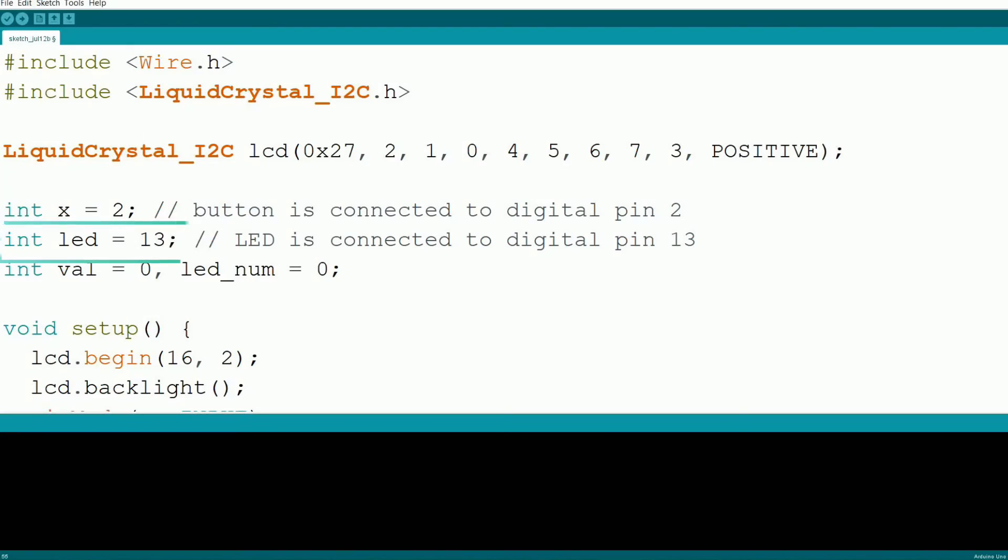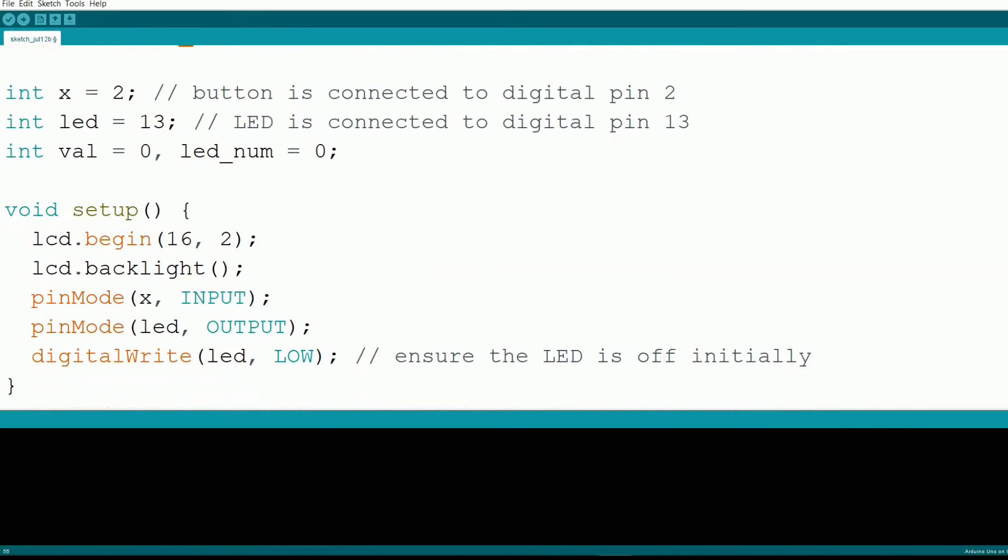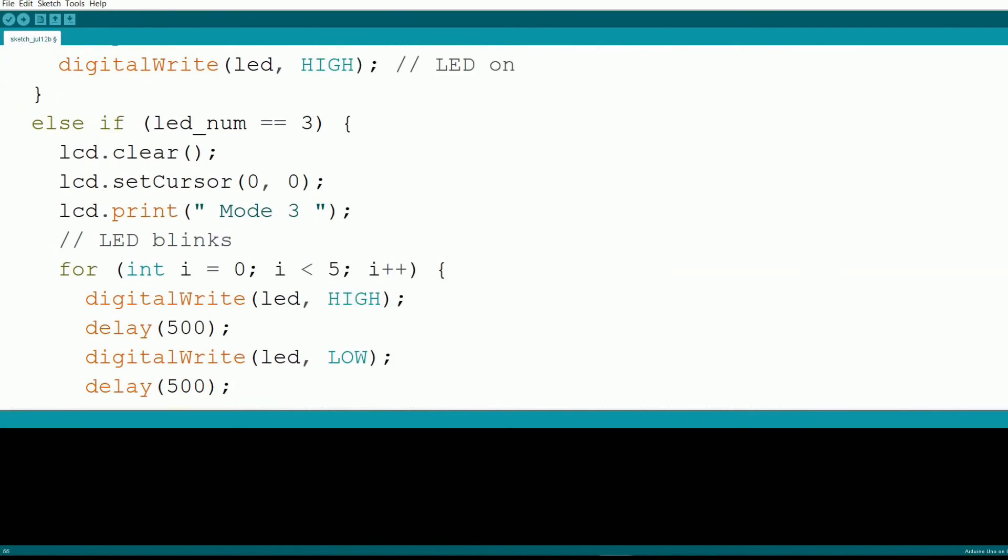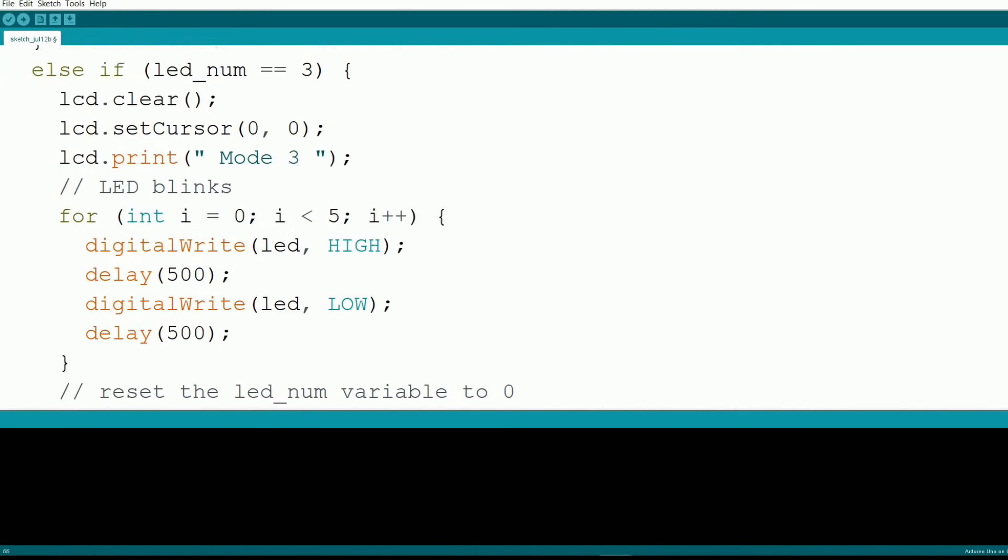In this updated code, we added an LED connected to pin 13. In mode 1, the LED is off. In mode 2, the LED is on. In mode 3, the LED blinks 5 times before resetting back to mode 1. Let's see it in action.